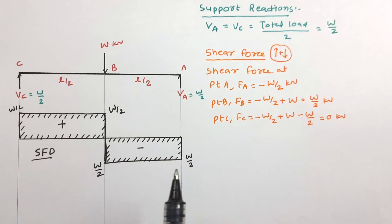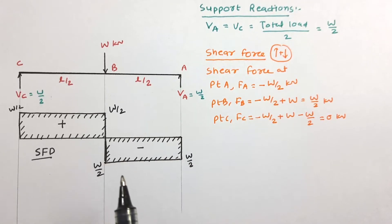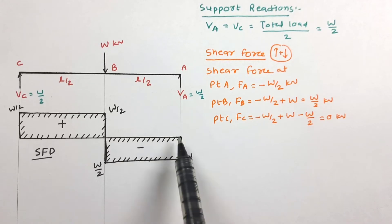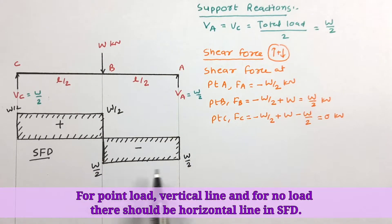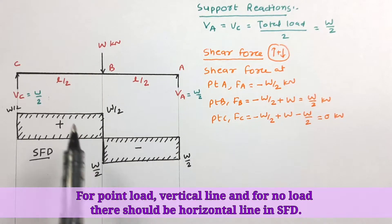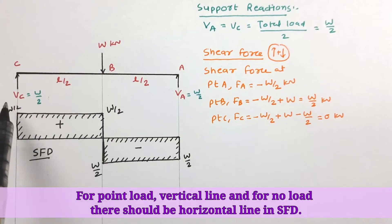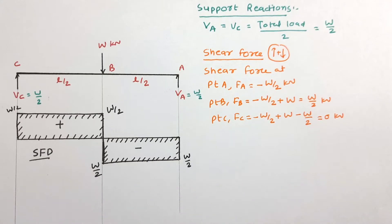In a simply supported beam, the shear force diagram is on both sides — positive and negative. Where there is a point load, we draw a vertical line; where there is no load, we draw a horizontal line. At the support there is another point load, so again a vertical line. This is our final shear force diagram.